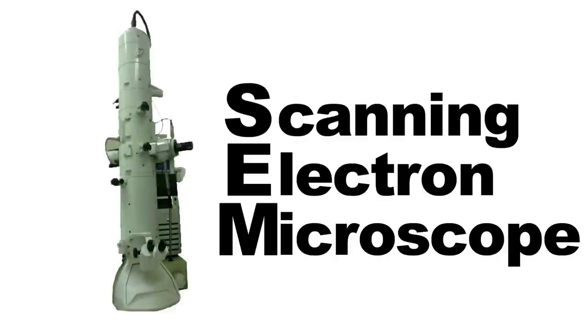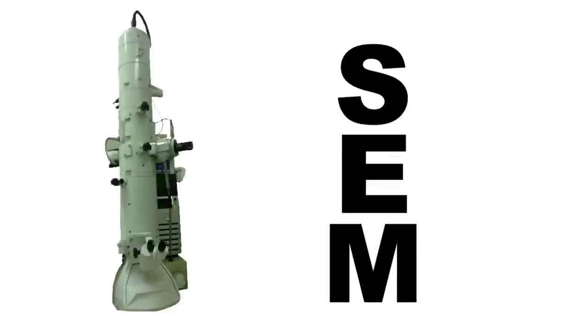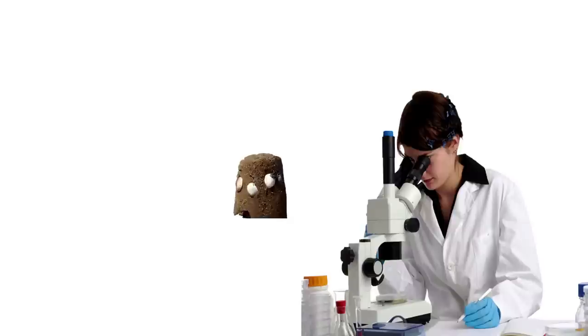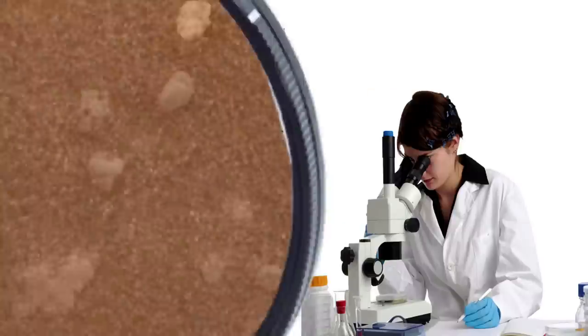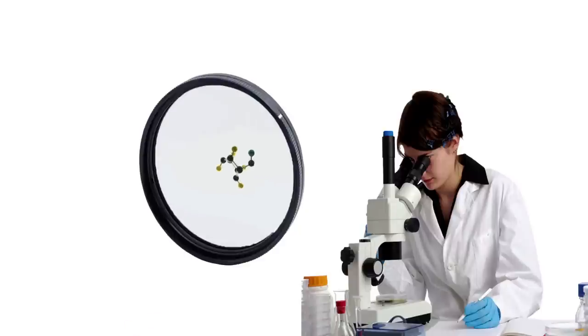Behold, the scanning electron microscope, or SEM. But what does it do? Like any other microscope, this device allows us to see objects that would normally be too small to study in detail, or even too small to see with the unaided human eye.